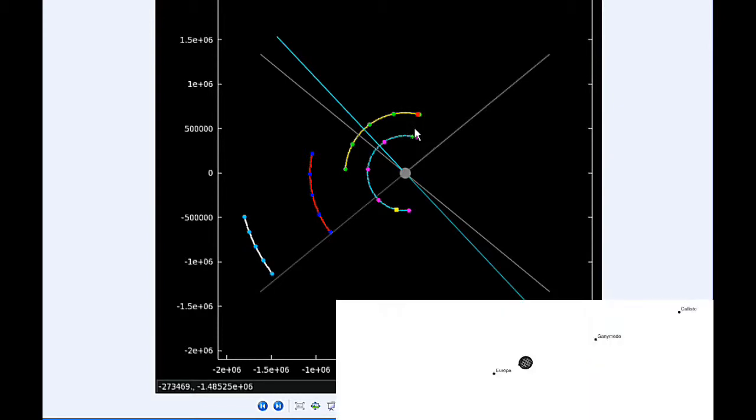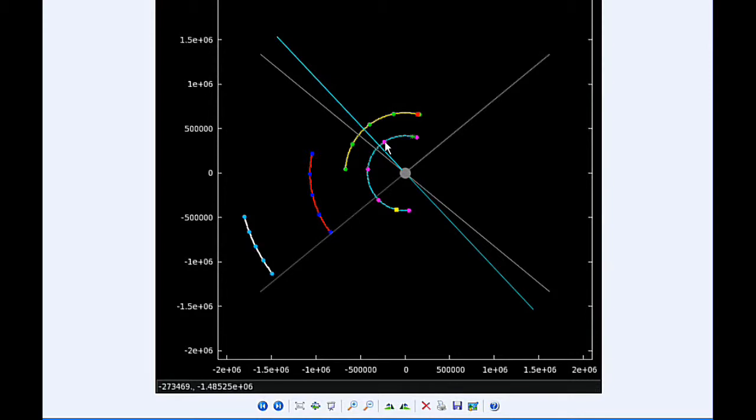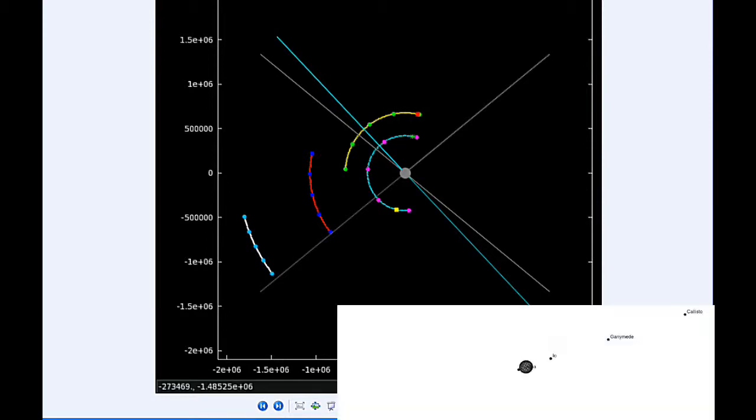By six hours UTC, Io has begun its transit of Jupiter. At 6:52 UTC the shadow of Io ingresses. At 8:17 UTC Io ends its transit, and at 9:09 UTC the shadow of Io egresses.